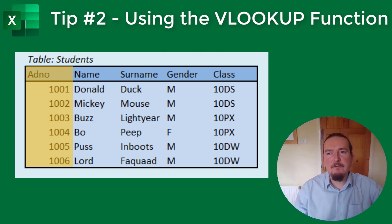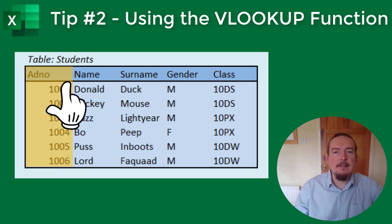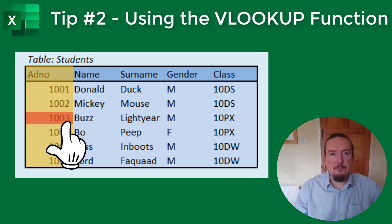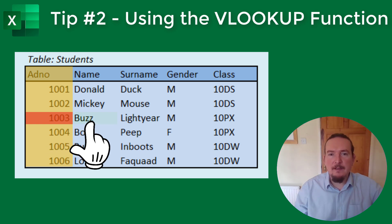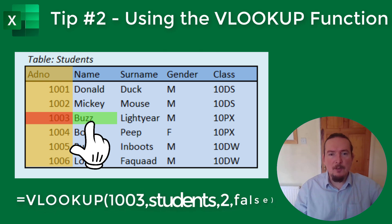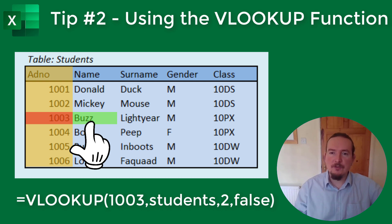Imagine you wanted to know the name of the student with an ADNO of 1003. You would most likely scan down the first column until you found the number 1003, then read across to the name column and there would be your answer: BUZZ. A VLOOKUP function does exactly the same thing. If I type in equals VLOOKUP, Excel returns the value BUZZ.